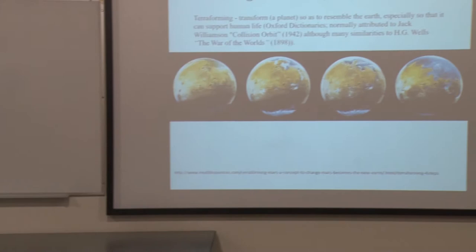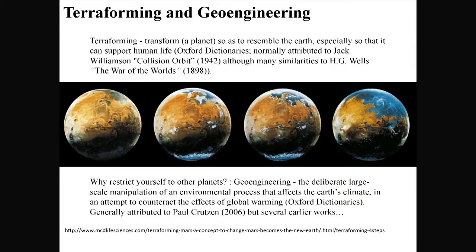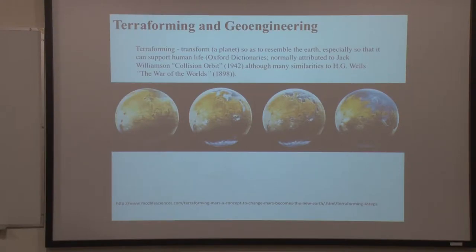Mars in the present day — we somehow find a way to warm up the Martian climate, melt the water that's there, melt the polar cap, and end up with oceans on Mars. That's terraforming. This actually goes back to a novel called Collision Orbit from the 1940s by Jack Williamson. If you've ever read War of the Worlds, the concept there is that the Martians are trying to Mars-form the Earth — coming here and wanting to make it more Martian. Same idea as terraforming, but going in a slightly different direction.